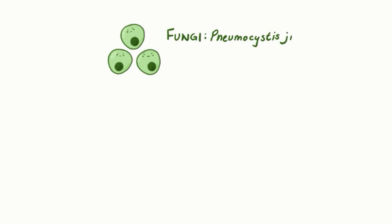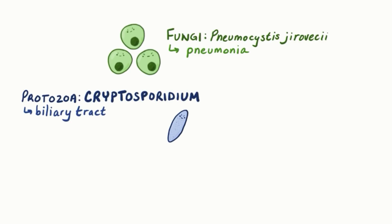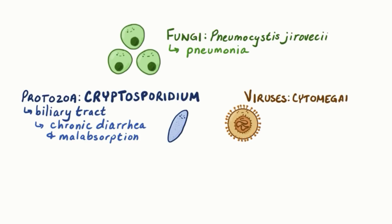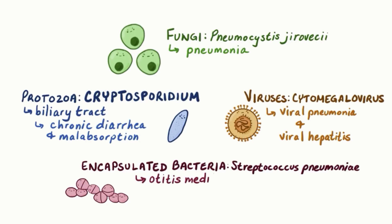Ultimately, individuals with hyper-IgM syndrome are predisposed to certain infections including fungi like Pneumocystis jirovecii, which causes pneumonia; protozoa like Cryptosporidium, which infects the biliary tract and causes chronic diarrhea and malabsorption; viruses like cytomegalovirus, which often causes viral pneumonia or viral hepatitis; and encapsulated bacteria like Streptococcus pneumoniae, which can cause otitis media, sinusitis, and bacterial pneumonia.